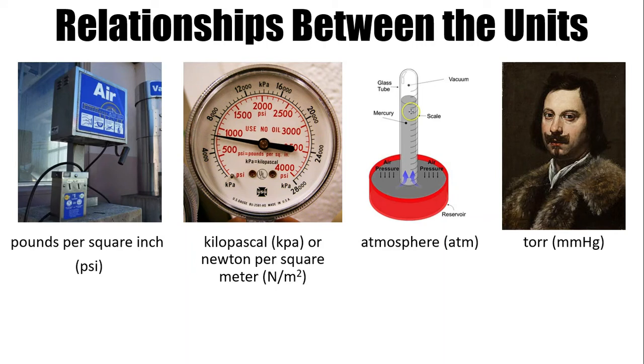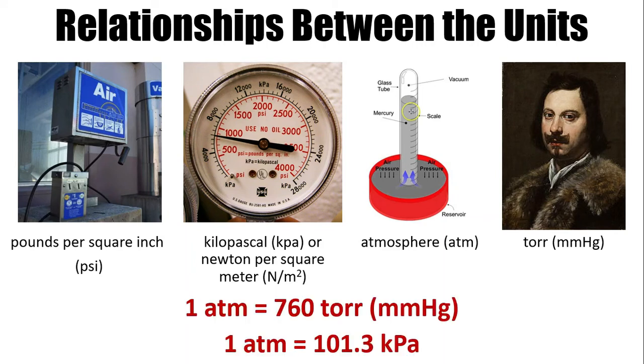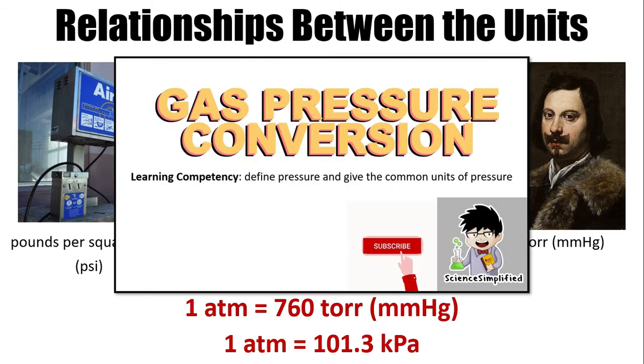Going back to the units, there are relationships between them. We say that one atmosphere is equal to 760 Tor, or millimeter mercury, and one atmosphere is equal to 101.3 kilopascal. We're not going to discuss how to convert because we have another video for that. If you want to practice conversion, please view this video.